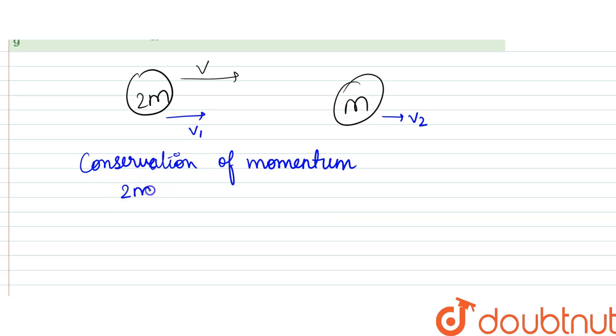would be 2m into v equals 2m·v₁ plus m·v₂. Right, they are all in the same direction, so it would be v equals v₁ plus v₂ by 2. So from here we can